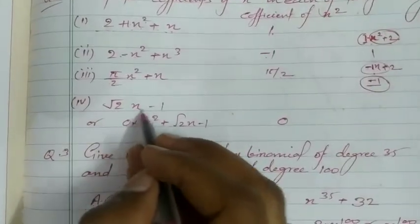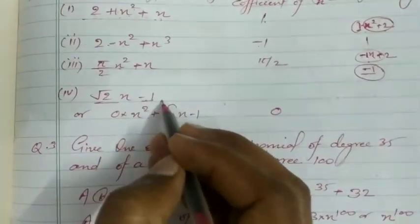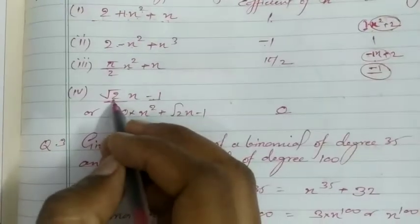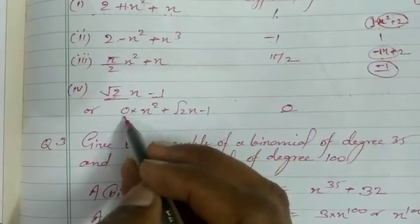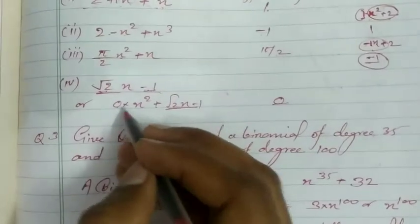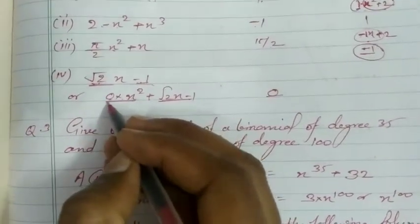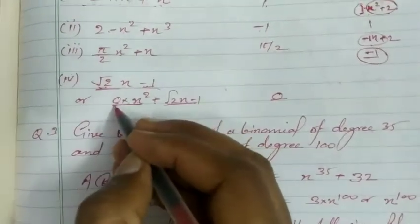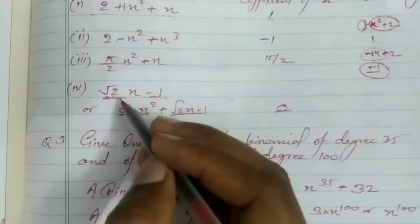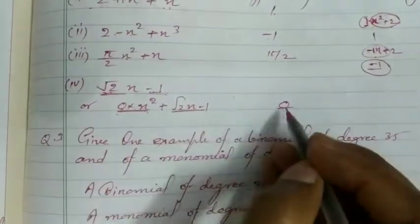In the fourth part, √2·x − 1: there is no term of x² here. So the coefficient of x² is 0. You can also write the polynomial as √2·x − 1 + 0·x² to show this explicitly, since 0·x² is zero and doesn't change the polynomial. Whenever x² does not appear in the polynomial, its coefficient is 0.